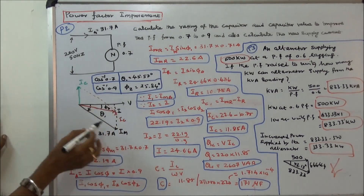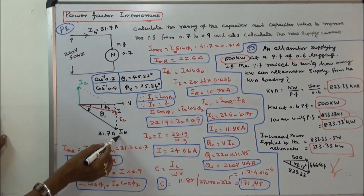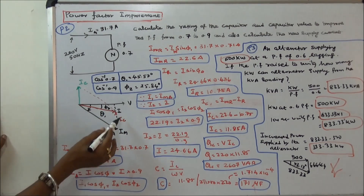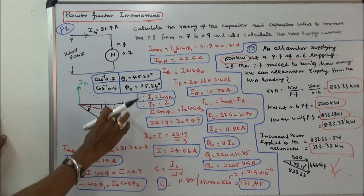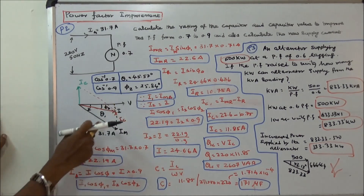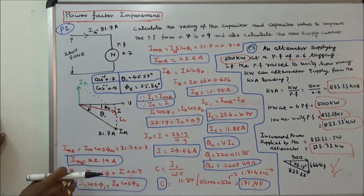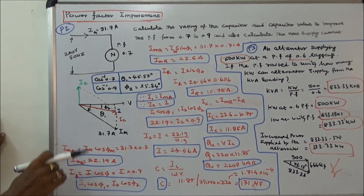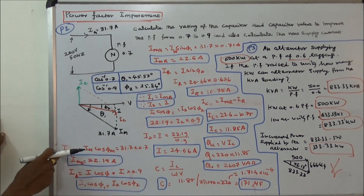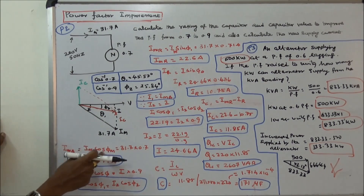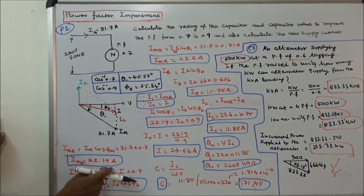The phasor diagram is given showing Ic, the supply voltage, motor current of 31.7 amps, new supply current, and Ic. φ1 = 45.57°, φ2 = 25.84°. First, we calculate the active component of current: Im × cos φm = 31.7 × 0.7 = 22.19 amps.